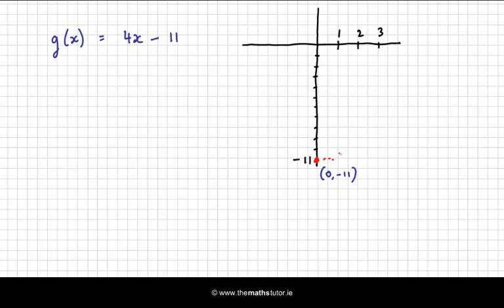So across 1, this point here is on it, and that's minus 7, and then we go across 1 and up 4, across 1 and up 4. So all of these points are on this straight line.